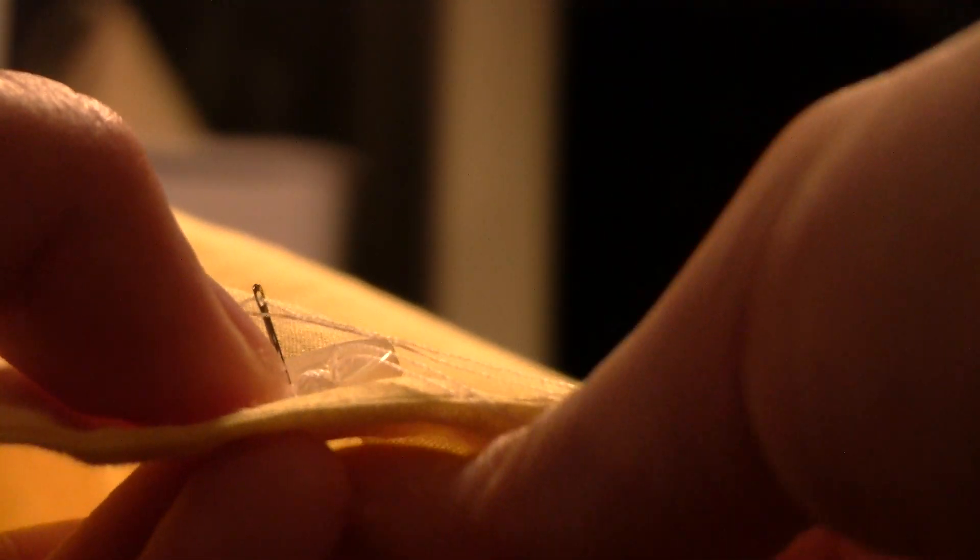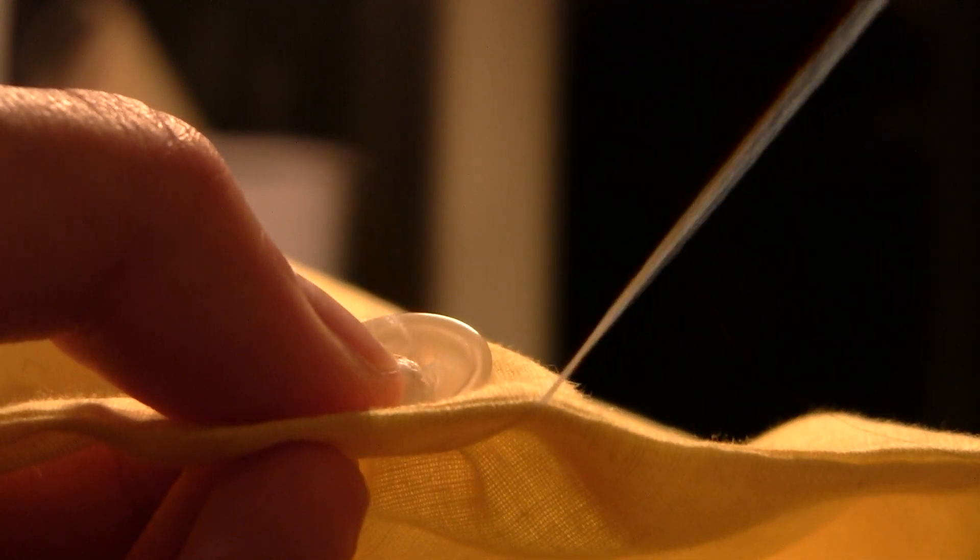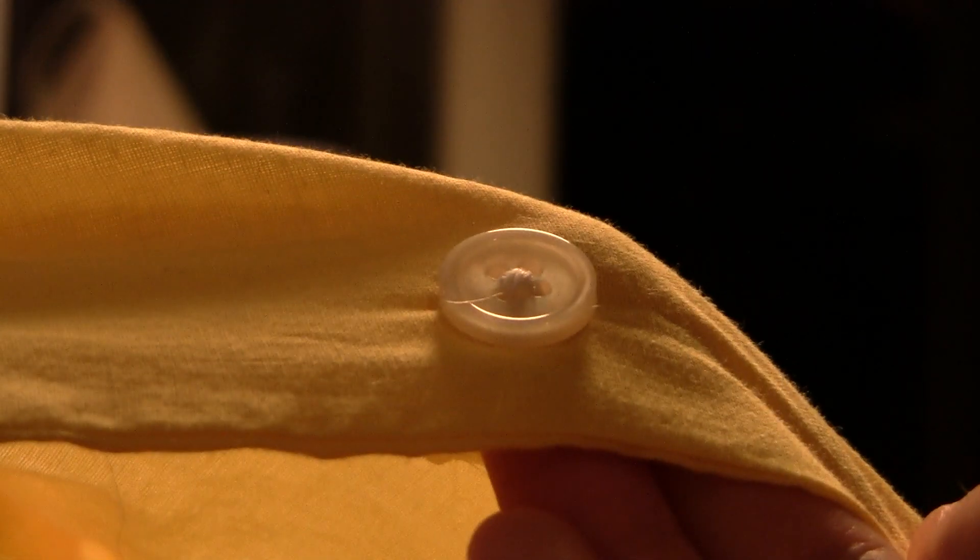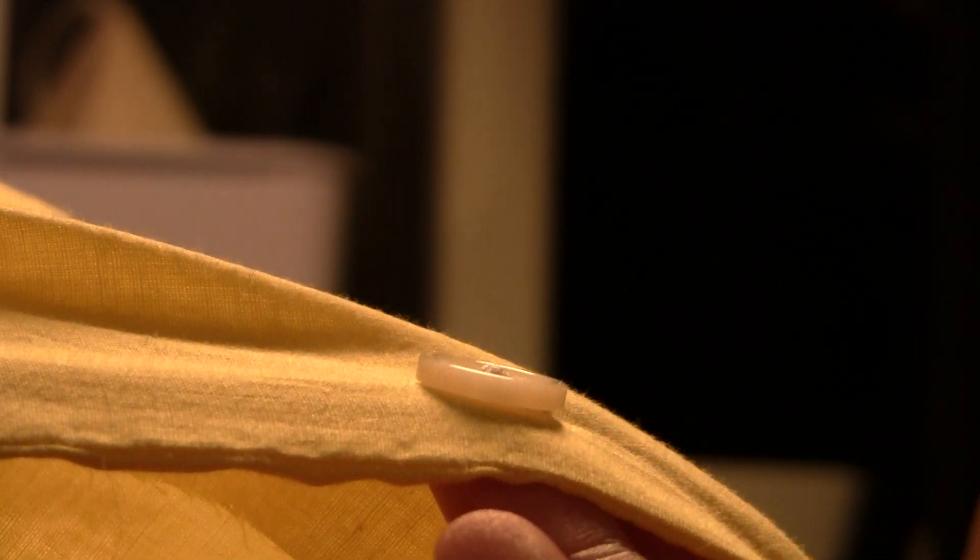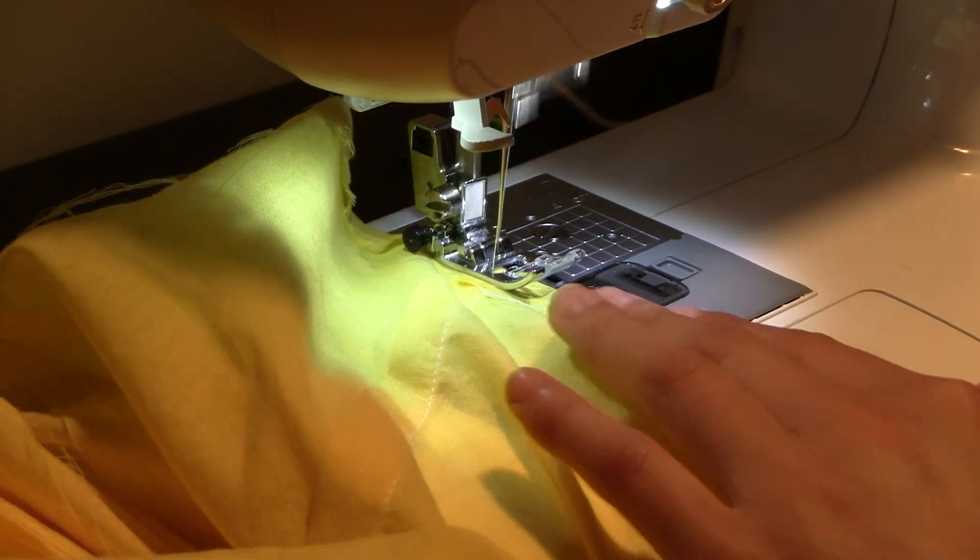Next, I stitched on corresponding buttons for the buttonholes. If you collect them for long enough, you'd be surprised how many free matching buttons you get with your clothing. I've been able to make several blouses just from free buttons. Lastly, I stitched the hem, which I probably should have turned over twice instead of once.